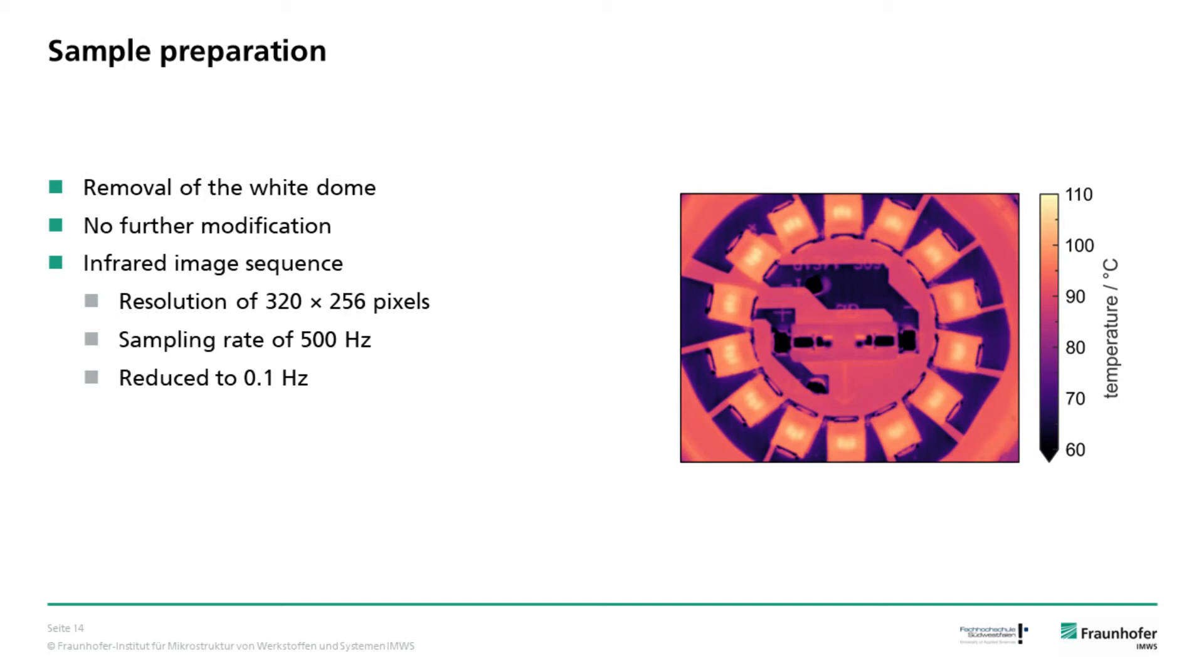To record the thermographic image series, we used a scientific-grade thermographic camera with a resolution set to 320 by 256 pixels. Its sampling rate was lowered from 500 Hz at the beginning of the experiments to one-tenth of a Hz at the end of the experiments. This was done with regard to the different time scales in which the cooling happens. Additionally, this saves disk space as well as computational time.